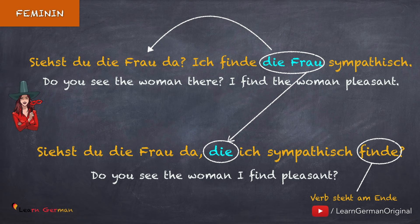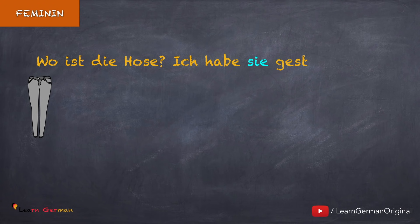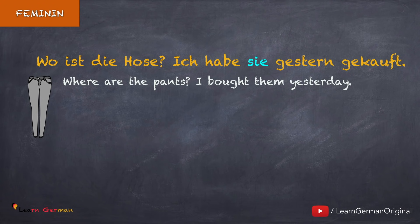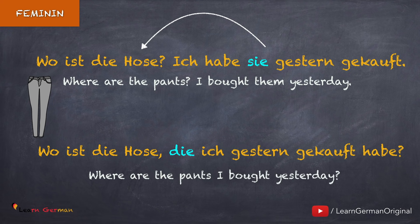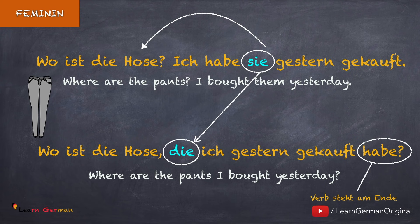In this sentence die is replacing die Frau as a pronoun — this pronoun is an accusative. Don't forget that the verb will be placed at the end. Wo ist die Hose, die ich gestern gekauft habe? In this case we are using an accusative pronoun sie in the original sentence, but when we make a Relativsatz, instead of using the pronoun sie we use the relative pronoun die. The verb is placed at the end.